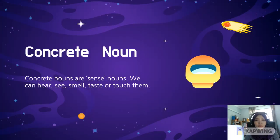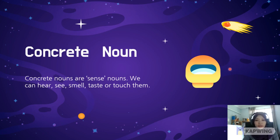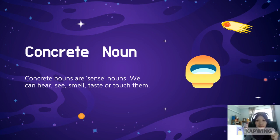What is concrete noun? Concrete nouns are sense nouns. We can hear, see, smell, taste, or touch them. As you can see from the word 'concrete' itself, concrete is something that we can touch — it's very sturdy.